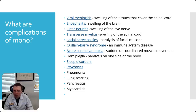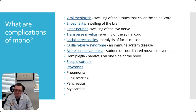There are some rare but possible complications from Epstein-Barr virus. These can happen during the initial infection or after reactivation. Some of the main ones include: meningitis, which would be a viral meningitis — swelling of the spinal cord tissue; encephalitis, which is swelling of the brain; optic neuritis, where the eye nerve is inflamed; and transverse myelitis, another swelling of the spinal cord but different from meningitis.